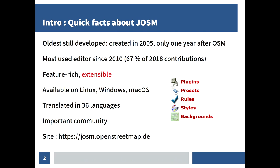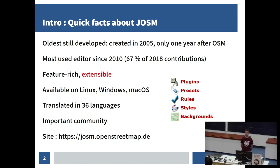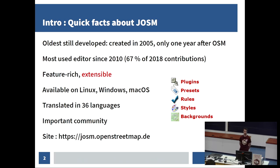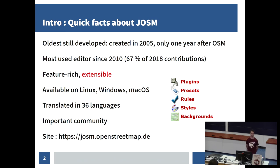You might know it as the oldest and most widely used editor, still actively developed. It was created only one year after OSM itself. Its particularity: it has a rich set of features, and the editor is greatly extensible through many possible extensions. It is available on all platforms — Linux, Windows, macOS. It is translated in a vast number of languages, benefits from an important community of users, and you can check its website at josm.openstreetmap.de, as it is originally a German project.